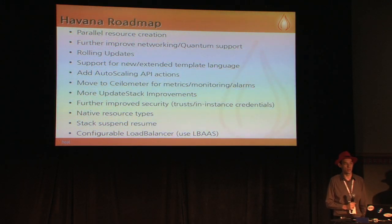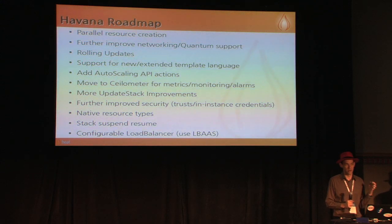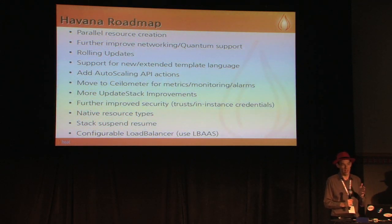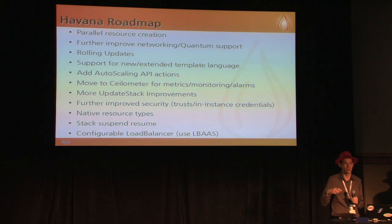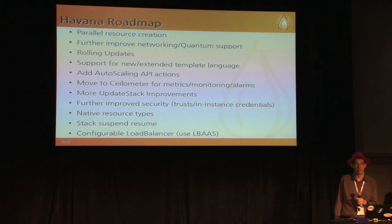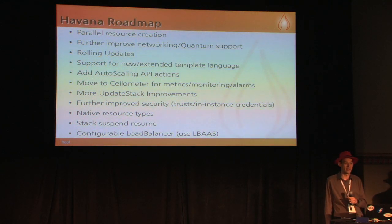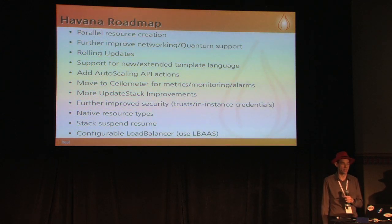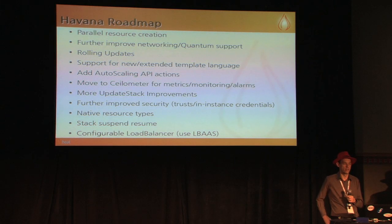A very big part of orchestration is not just creating your stack in a replicable way, but also being able to update it. You can have your template in version control and see what was updated. Rather than having to go through all the APIs for every single update and figure out the right order, HEAT can handle that for you. At the moment we have some pretty basic stuff — a lot of resources need to be created, destroyed, and recreated when you update a stack. We're going to be looking at moving as many of those as possible over to rolling updates where you don't have to destroy the resource to recreate it, so there'll be less interruption.